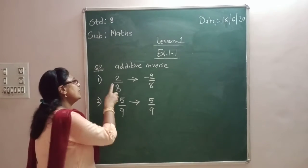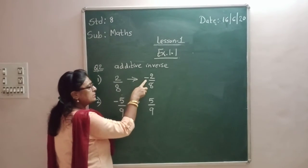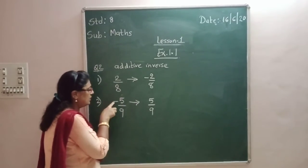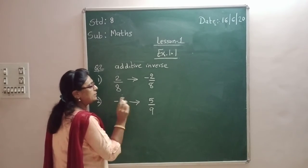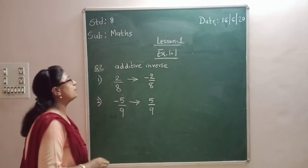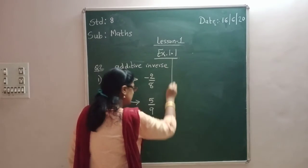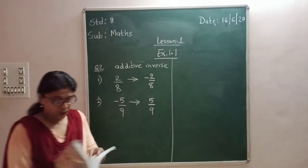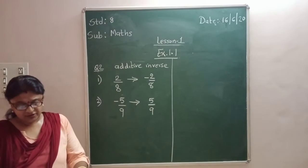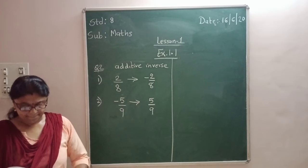If you are given a positive number, it becomes negative. If you are given a negative number, it becomes positive. Question number 2 — the first two are done. The remaining you have to do for homework.